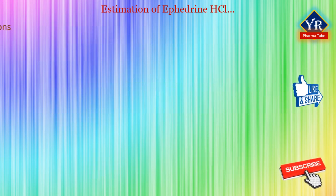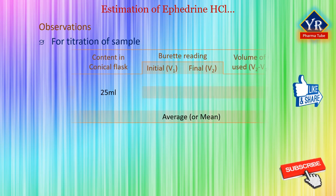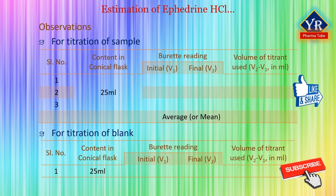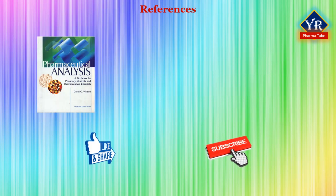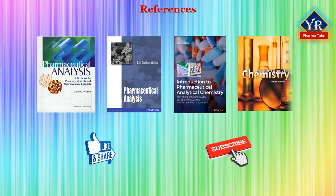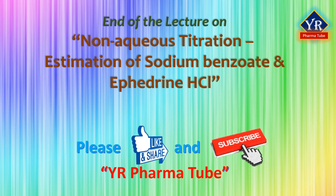For both experiments discussed — estimation of sodium benzoate and ephedrine hydrochloride — the observations have to be recorded according to the tables given here for calculating the percentage purity of the drugs. This is the list of references followed for the lesson. That's all in this video on the estimation of sodium benzoate and ephedrine hydrochloride. With this, we end the topic of non-aqueous titrations. In the next lesson, I will come up with a new topic. Till then, never stop learning and never stop watching my videos. Thank you for watching.